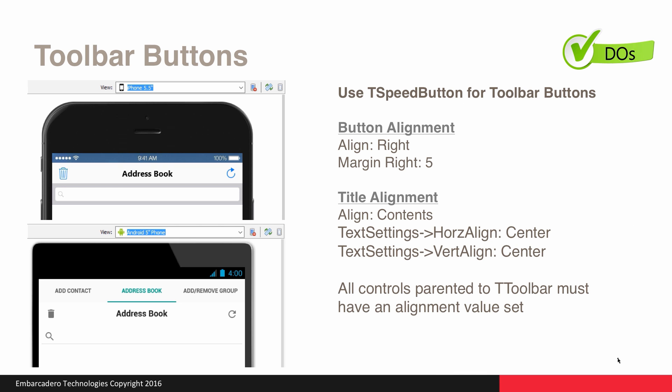When using toolbar buttons, you should always use T-SpeedButton. It's important to set button alignment — for example, the Refresh icon aligned to the right with a margin of 5, and the Trash icon aligned to the left with a left margin of 5. It's really important to set both the alignment and margins. When using titles along with buttons — for example, 'Address Book' — make sure the Align property for the T-Label control is set to Contents, and that the TextSettings HorizontalAlignment and VerticalAlignment property is set to Center. All controls parented to T-Toolbar must have an alignment value set.